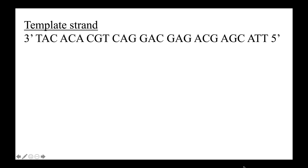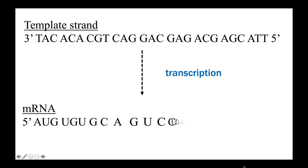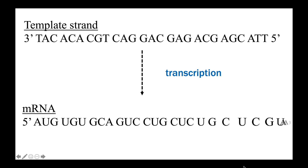Let's say you are given this sequence of the gene, and it is made clear to you that this is the template strand. What will be the sequence of the mRNA produced following the transcription process? You can pause this video to figure it out. Since this is the template strand, the mRNA produced will be complementary. In this case, it will be 5' AUG UGU GCA GUC CUG CUC UGC UCG UAA 3'.